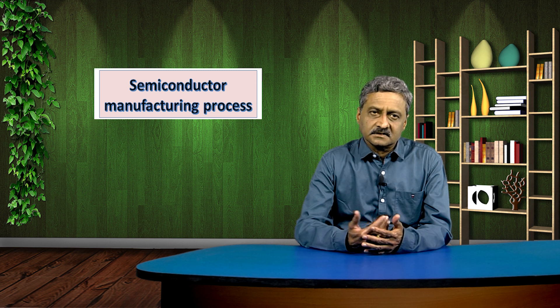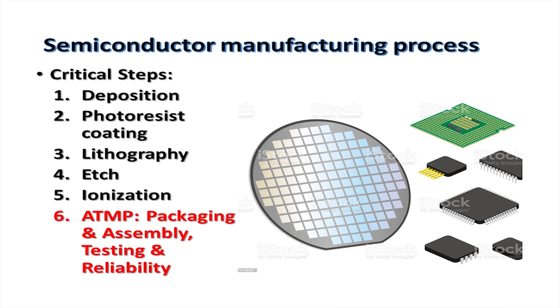What does semiconductor manufacturing involve? There are some six manufacturing steps. Before that there is the chip design, but then the manufacturing steps are primarily deposition, photoresist coating, lithography, etch, ionization, and the last one is ATMP, which is the topic of focus today.